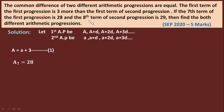It is also given that the eighth term of the second progression is 29. We use small a here because it is the second progression. So the 8th term of the second progression equals 29. We now need to find both arithmetic progressions.